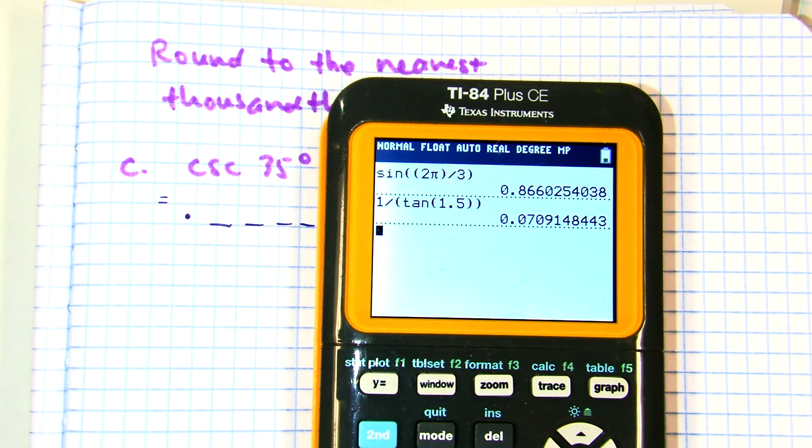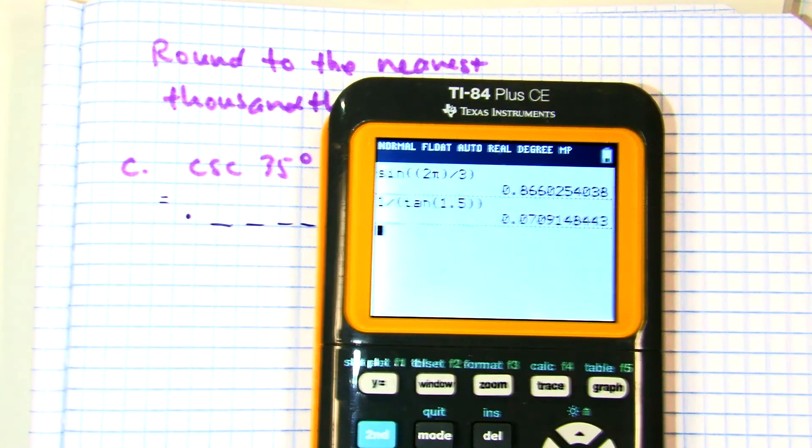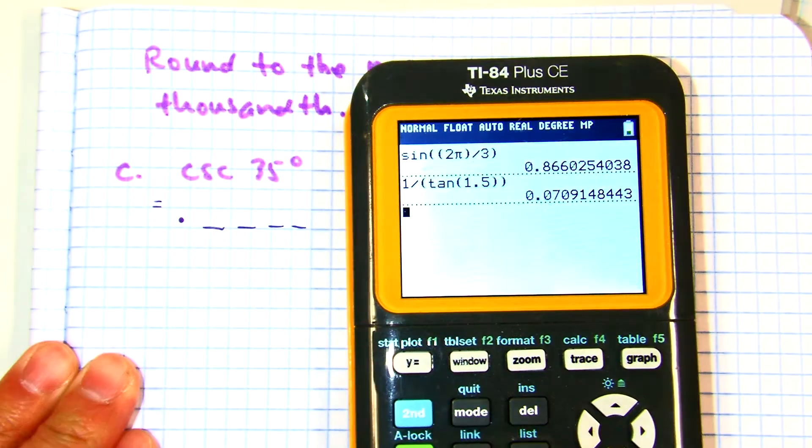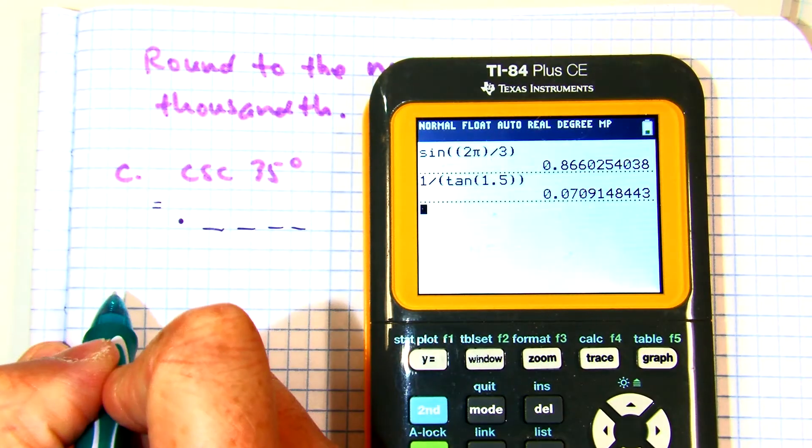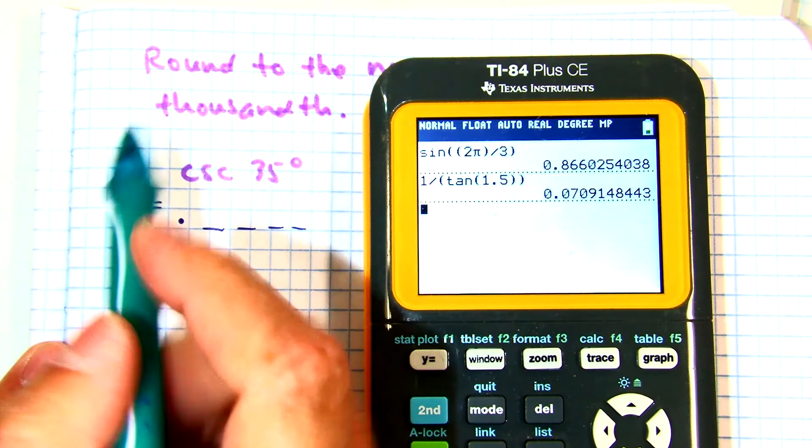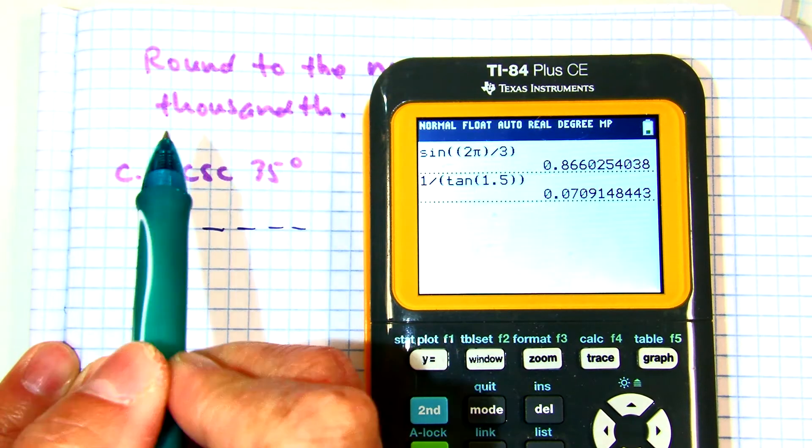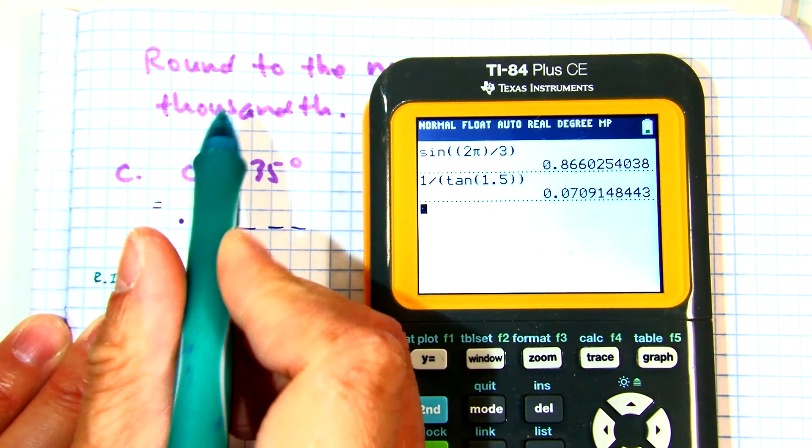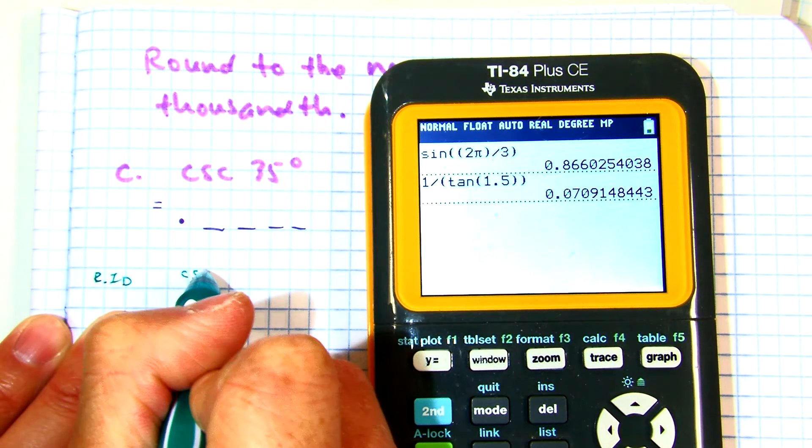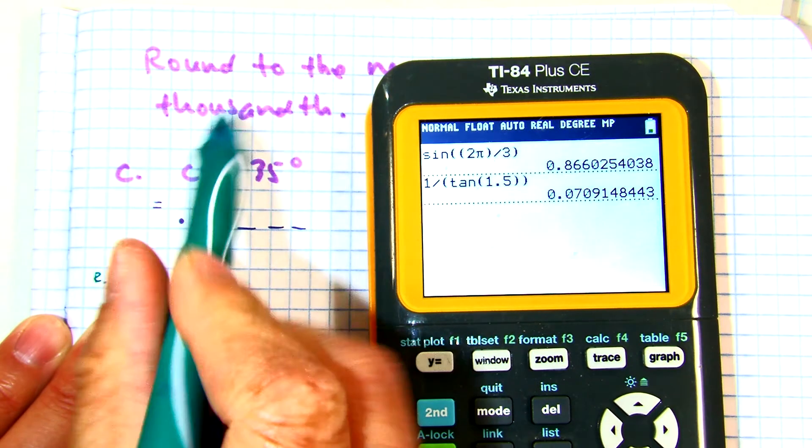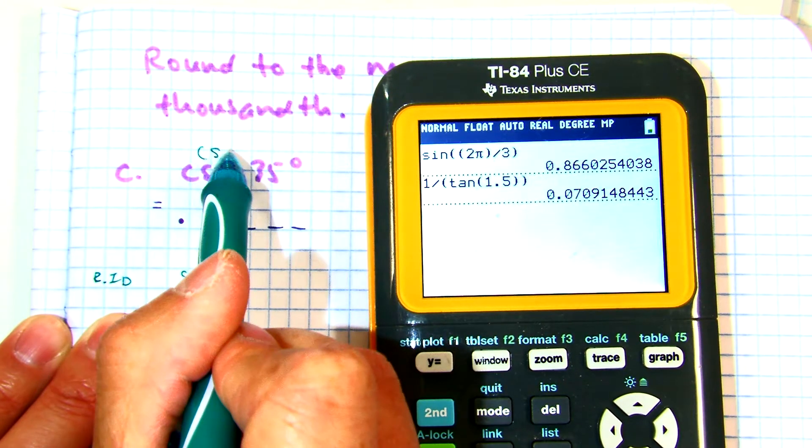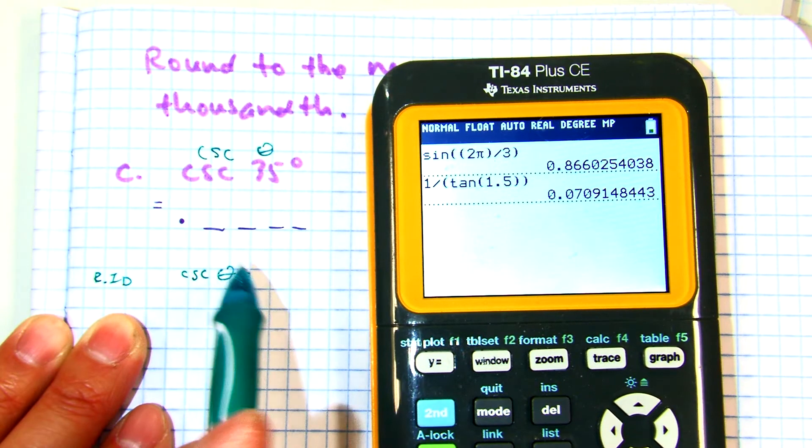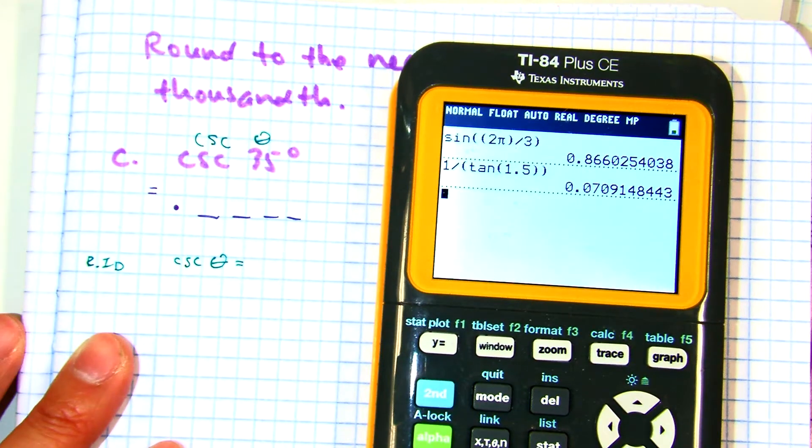Alexis, is cosecant on the calculator? What do I need? What's reciprocal identity? Cosecant, right? Cosecant of theta equals what? 1 over sine.